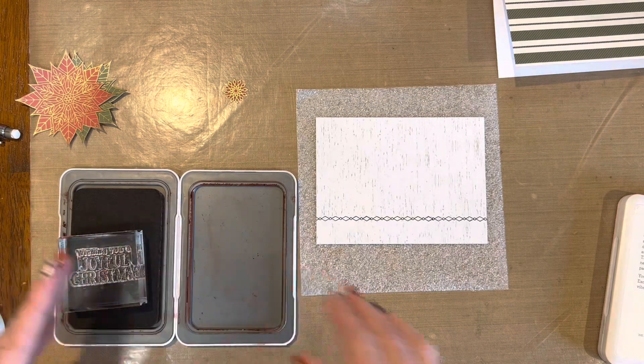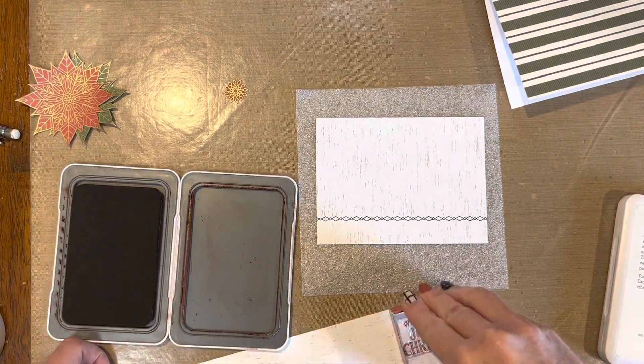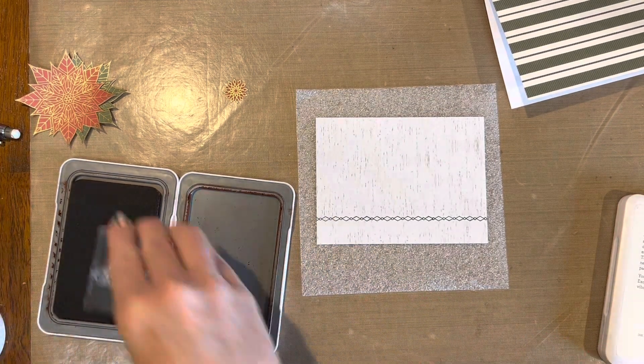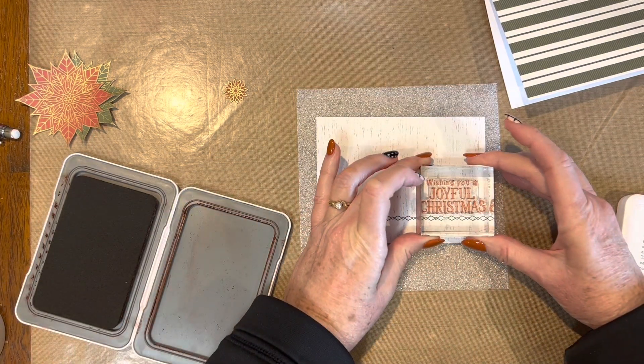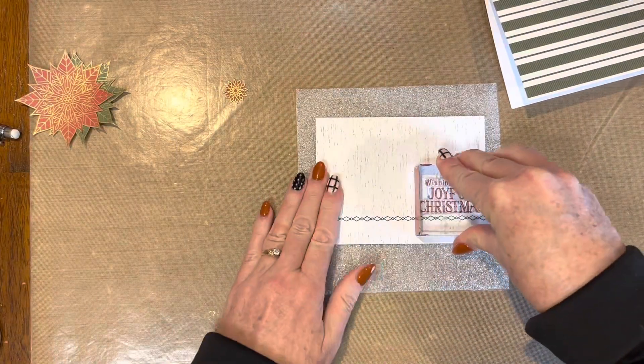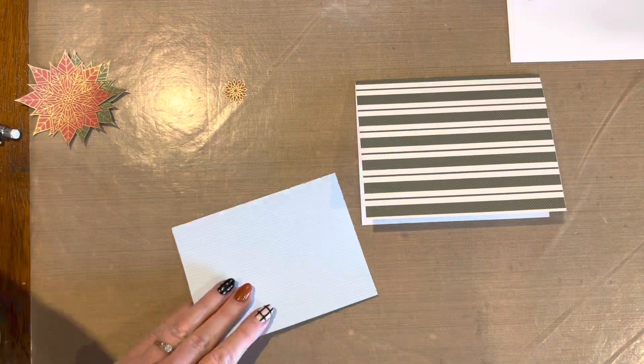Now I'm going to stamp Wishing You a Joyful Christmas, I believe is the sentiment I chose. I tried it on some scrap paper first just to make sure I had a good impression. I made sure I had that foam underneath my paper and I let it sit for a minute, just letting that ink soak into the paper. And I got a beautiful impression on that one.